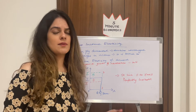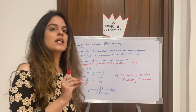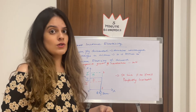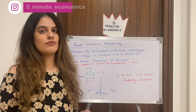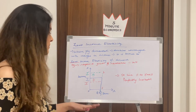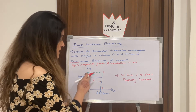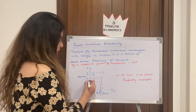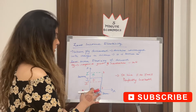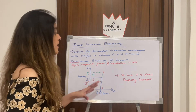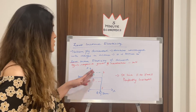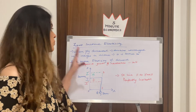This is the case for inexpensive necessities like salt, matchboxes, or newspapers, where we spend a very small proportion of our income. Even if income rises, we wouldn't start consuming a lot of salt, and even if income falls, we wouldn't stop using it. Graphically, as income moves from I to I-dash or I-double-dash, quantity demanded stays at Q. Joining the dots gives a demand curve DD — a straight line parallel to the y-axis, also known as a perfectly inelastic curve.